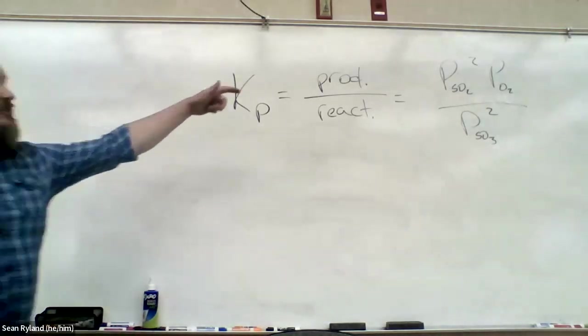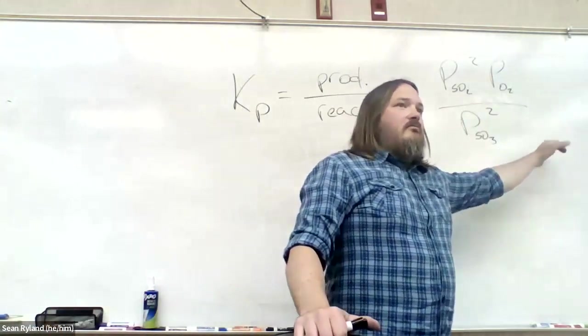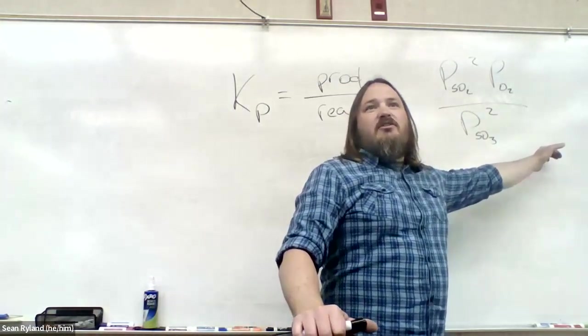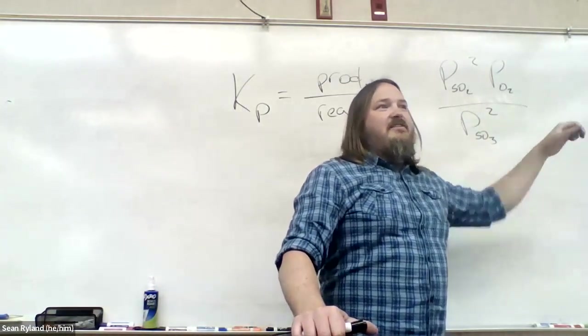So if we want K_P, we just need those three values. We have one of them. How do we get the others? Ice table. When in doubt with equilibrium is, again, where ice tables show up most commonly.